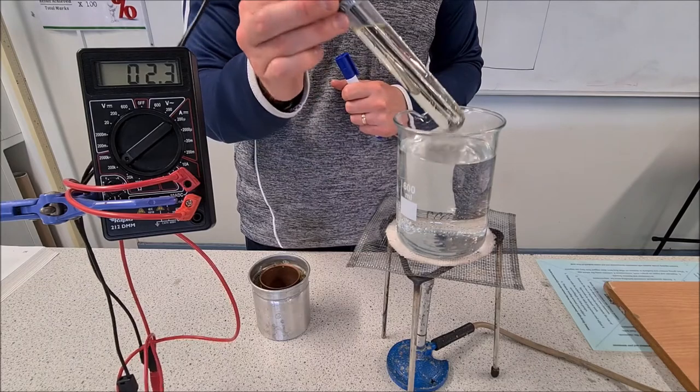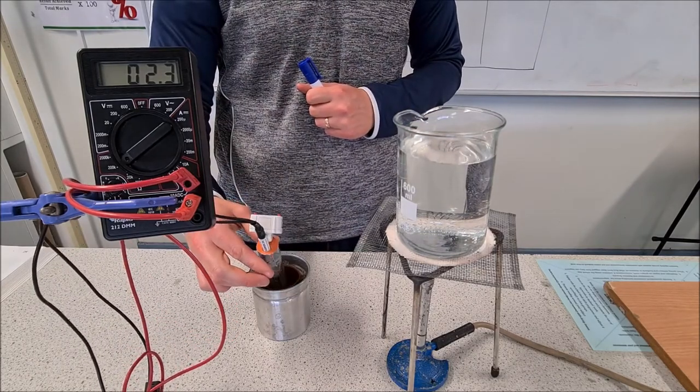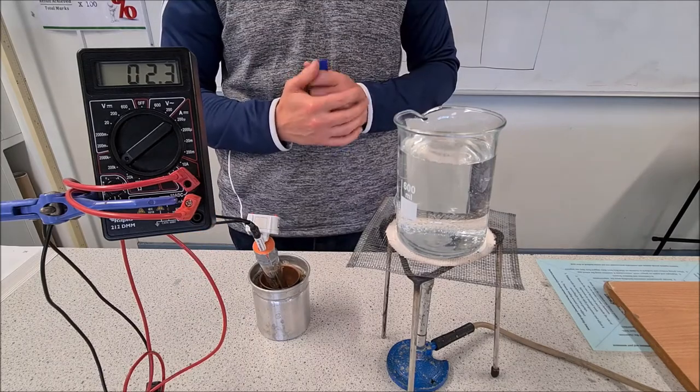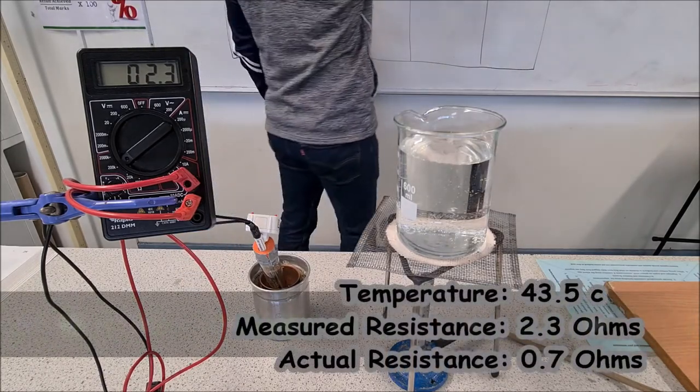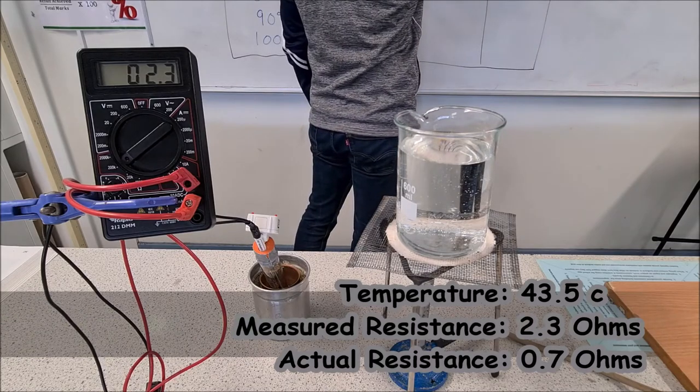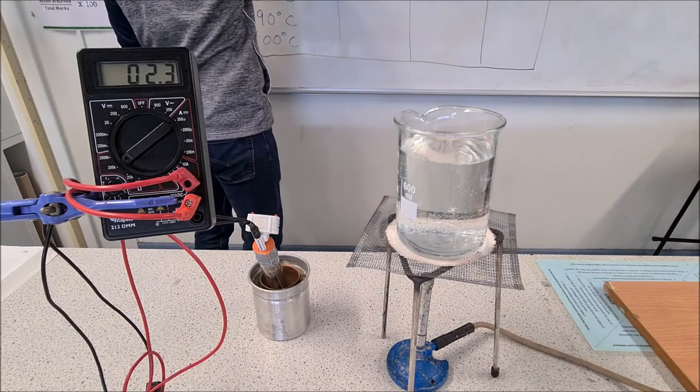So we're coming up on 40 degrees now. I'm just going to take it out and let it settle there for a few seconds. 43.5 degrees. What's the resistance? 2.3. So 2.3 ohms. The temperature was 42.5 degrees.